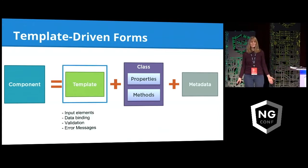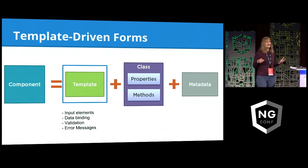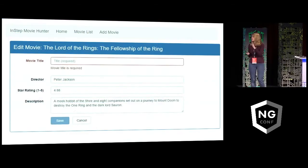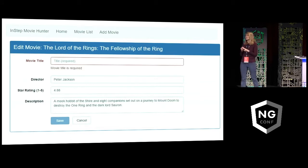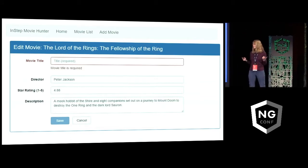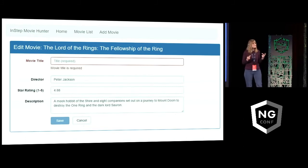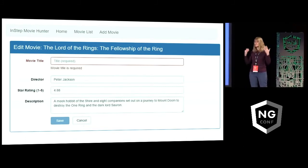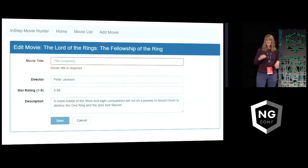So when we create our forms — our input elements, our data binding, our validation, our error messages — all of that is in the template itself. There are two basic things we want to do in our validation: one, we want to display some kind of message telling the user that something went wrong, and second, we want to provide some kind of visual indication that something went wrong.